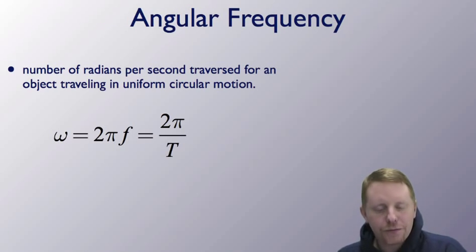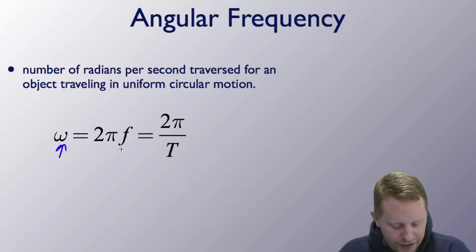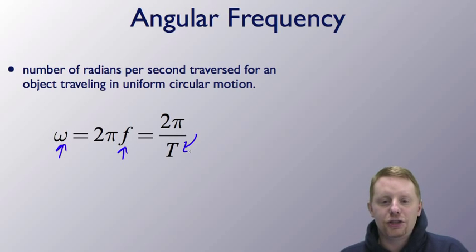Now angular frequency is the number of radians per second traversed by an object traveling in uniform circular motion. So we could write omega is 2π times the frequency, which is 2π over the period. There's a relationship that relates frequency, period, and angular frequency.